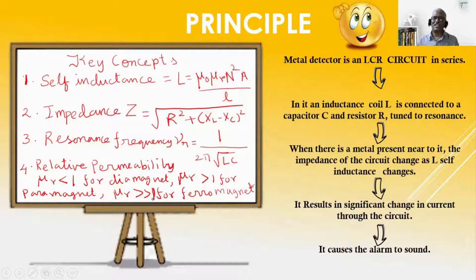Suppose a paramagnetic material like aluminum or ferromagnetic metallic steel is taken. In either case, μr is greater than 1 or very much greater than 1. That increases the L value according to this relation. As L increases, frequency decreases from resonance frequency. In this case also, impedance increases. As impedance increases, current falls from maximum value. So, the alarm is turned on.